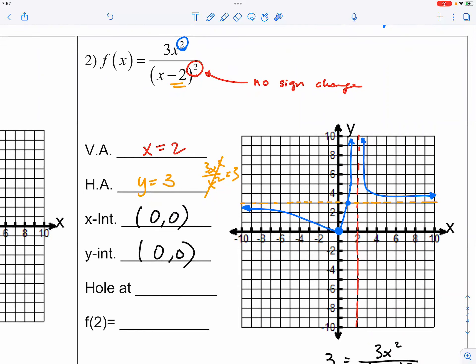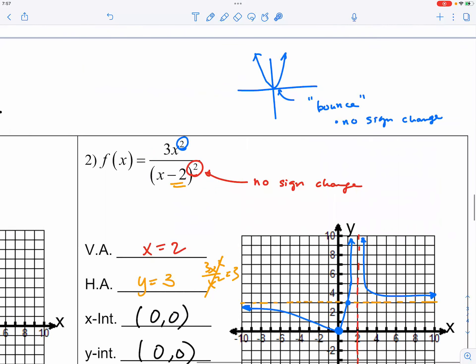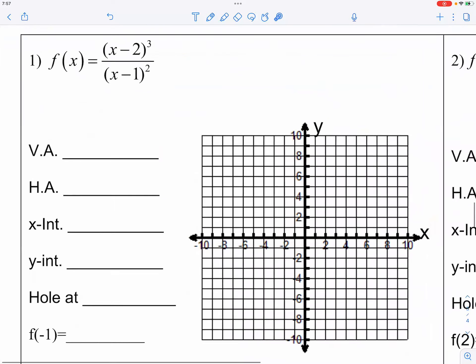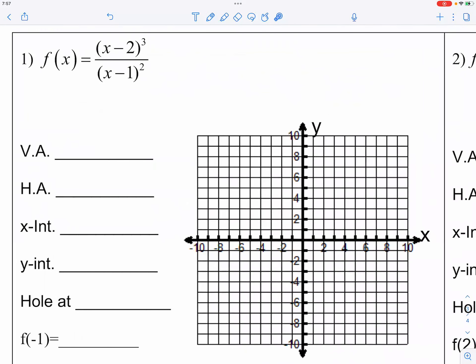Okay? So, whenever you see square, that means there's no sign change. And there's no sign change, you just keep going. Now, could you go ahead and take a look at number 1? Okay? The one next door. Okay?